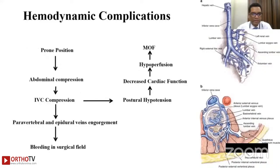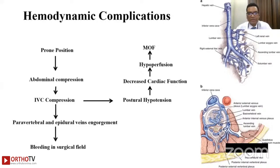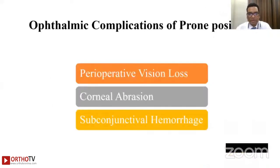Hemodynamic complications in prone position arise because abdominal pressure causes IVC compression, leading to engorgement of paravertebral and epidural veins and increased bleeding in the surgical field. IVC compression can also cause postural hypotension, decreased cardiac function, hypoperfusion, and multiple organ failure.